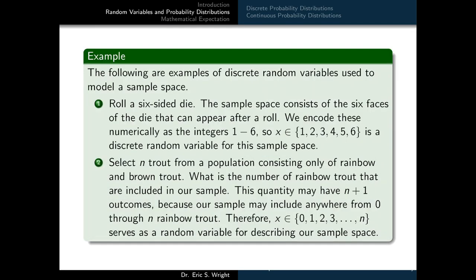Let's illustrate the concept of a random variable through examples. The following are examples of discrete random variables. We could imagine rolling a six-sided die. The sample space consists of the six faces that can appear after a roll, encoded numerically as the integers one through six. So our random variable X takes values from the set {1, 2, 3, 4, 5, 6} — it's a discrete random variable for this sample space.